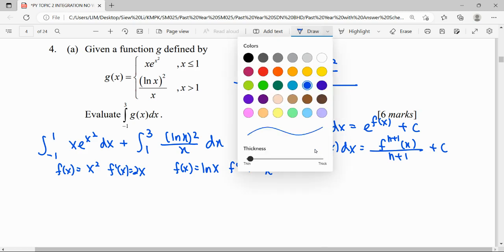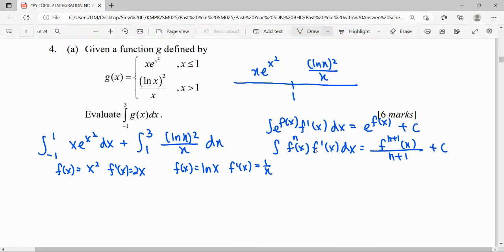So let us modify it for the first function, where we're going to multiply 2 and divide 2, so that we can get this 2x as the differential function and we can fulfill this pattern, e to the f(x). This is the f(x), so we can integrate it directly to get e to the f(x).